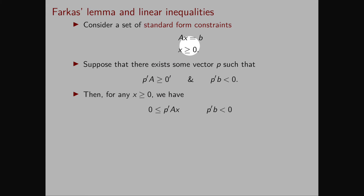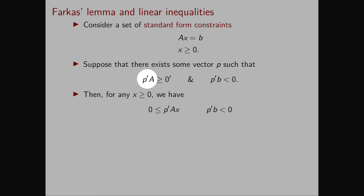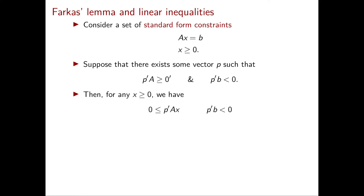Consider a set of standard form constraints: Ax = b, x ≥ 0. What I want to show is a possible way of convincing your boss that this system is infeasible. Suppose that there exists a vector p that satisfies p^T A ≥ 0^T and p^T b < 0. We will see that this vector p is the certificate we're searching for.